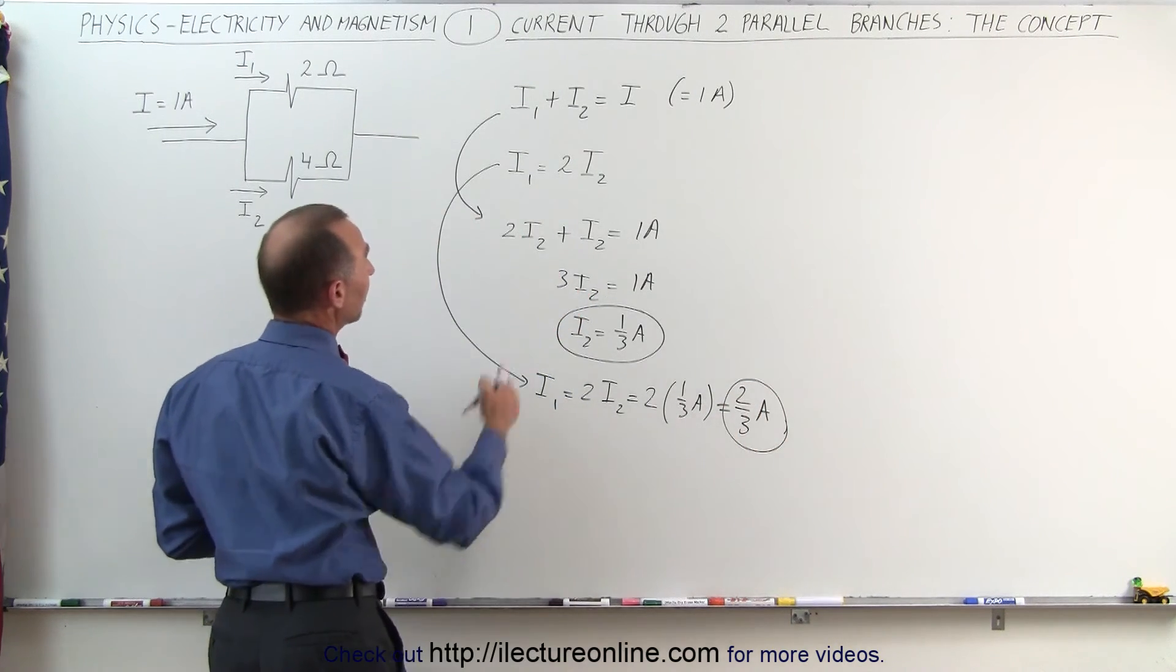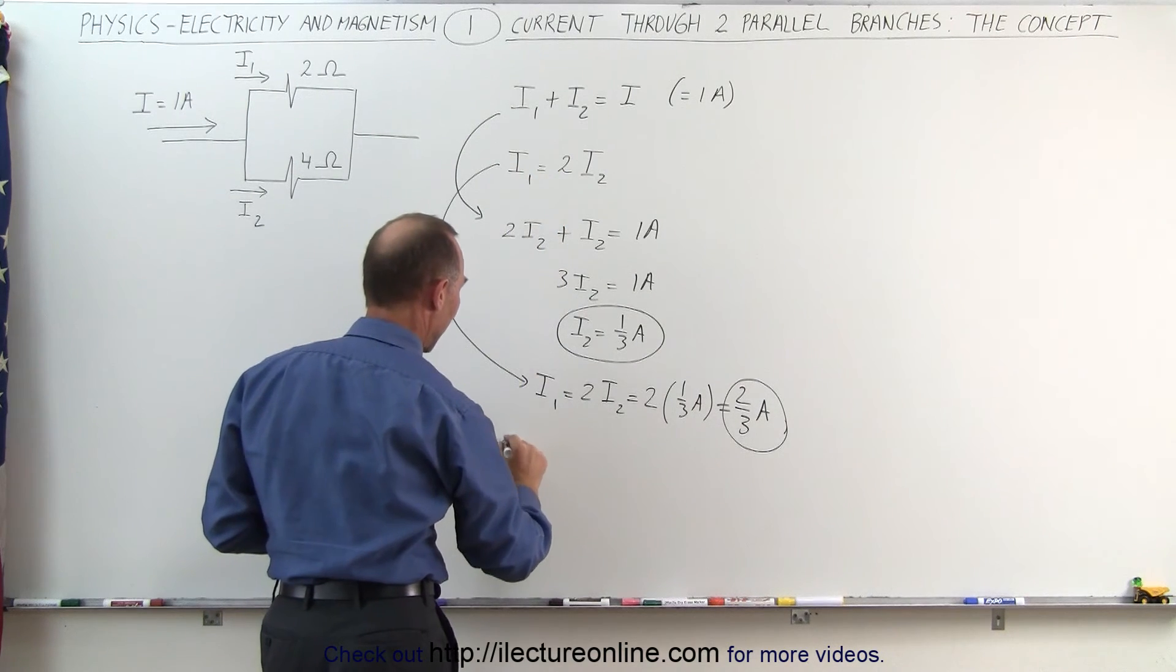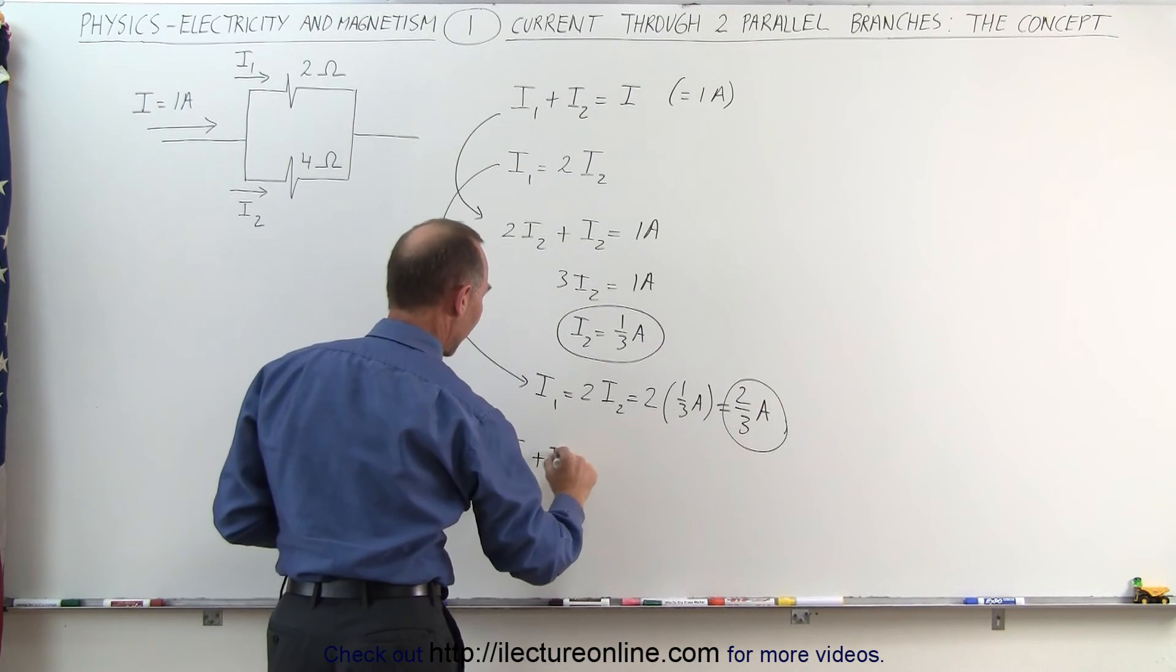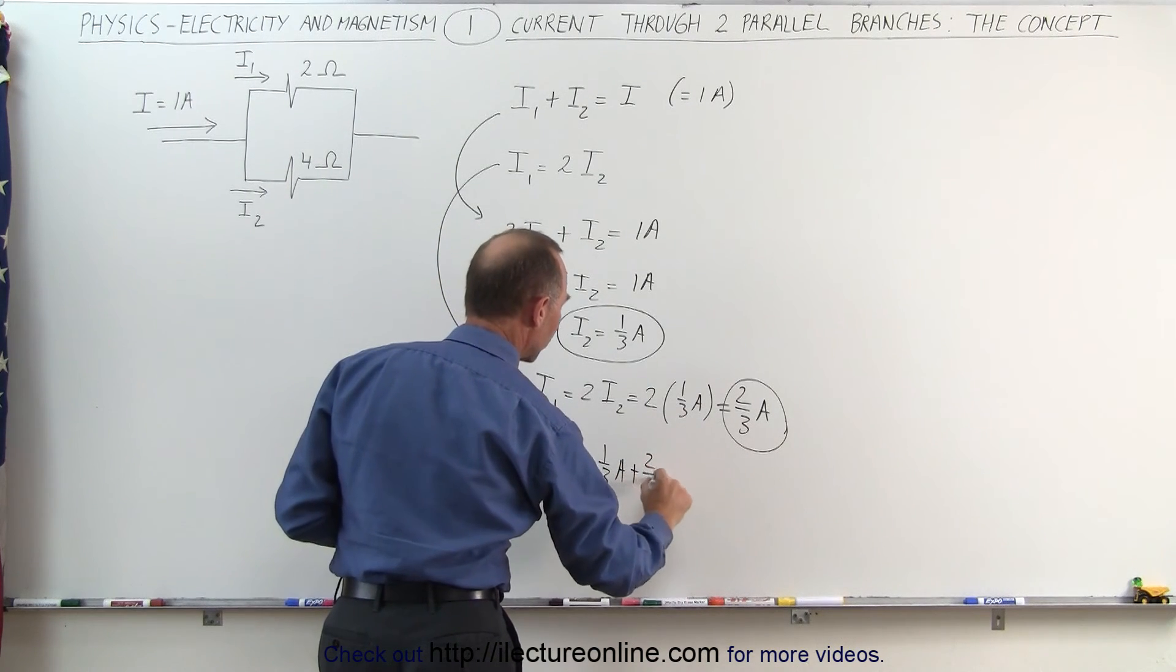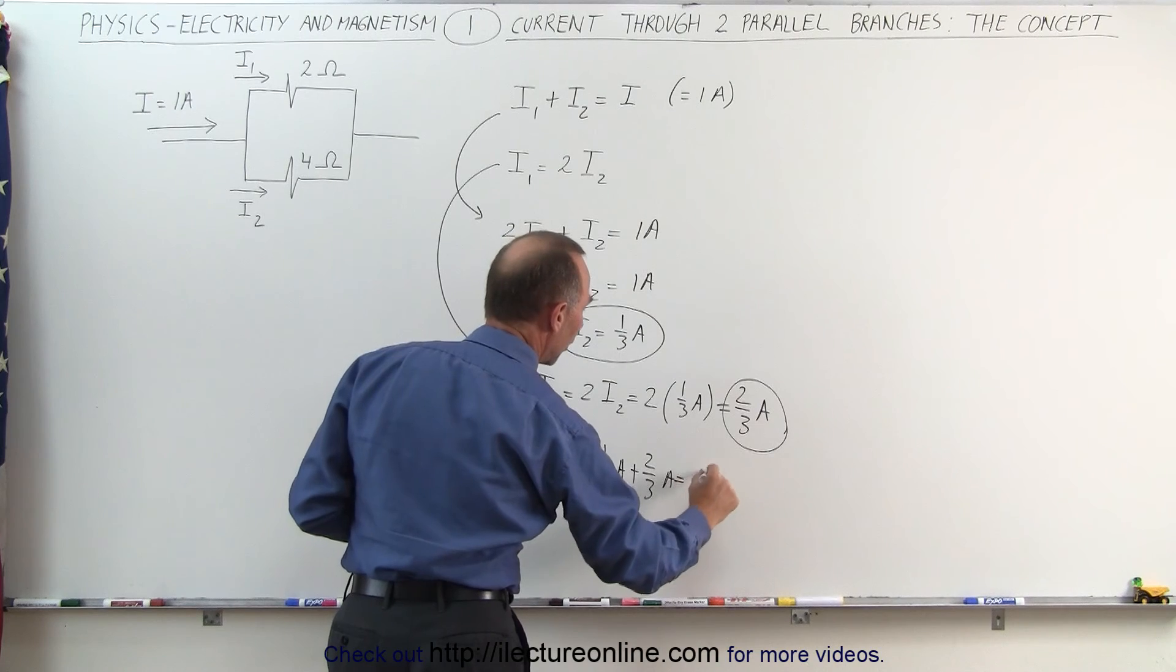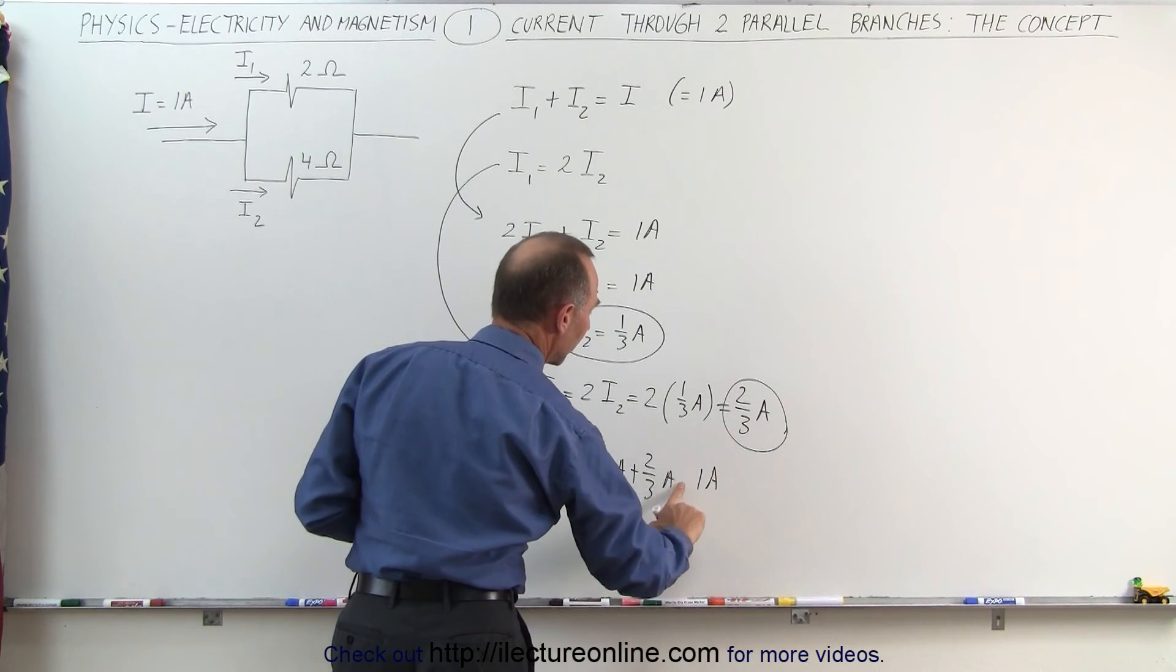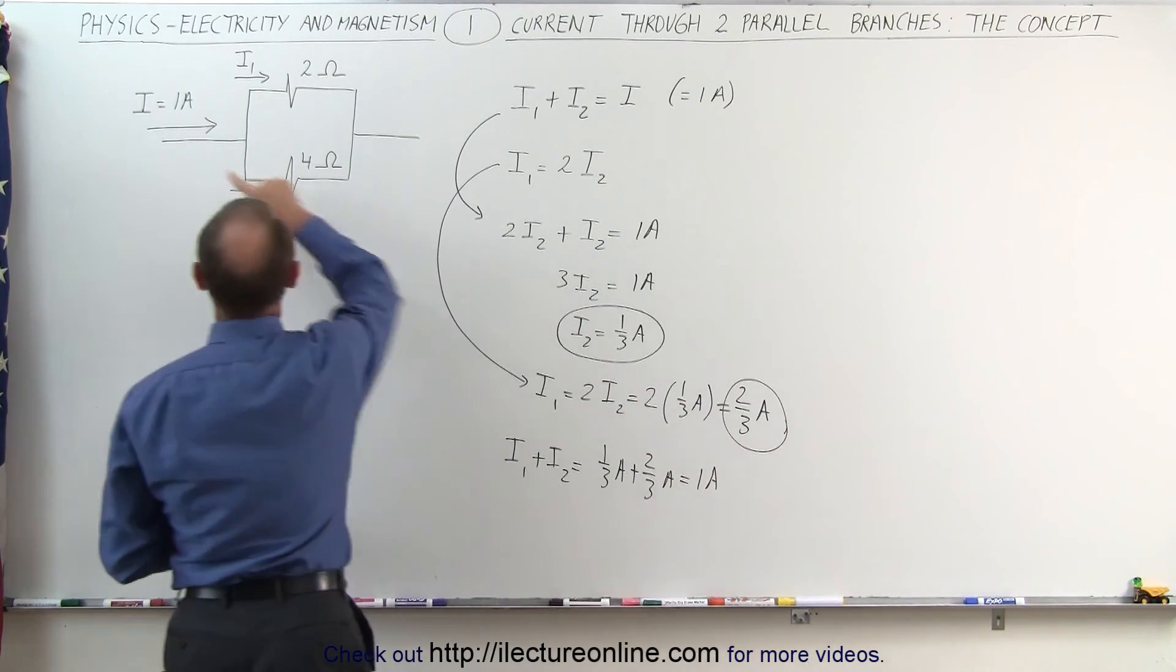And then, of course, together, when you look at this, we can then say that I1 plus I2, when you add them together, will be one-third of an amp, plus two-thirds of an amp, which is equal to a whole amp, which was, to begin with, the current flowing into the junction.